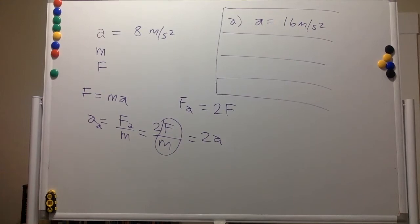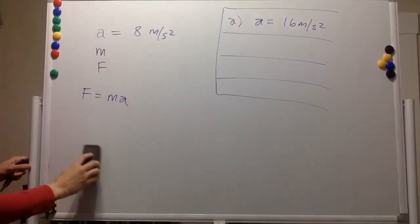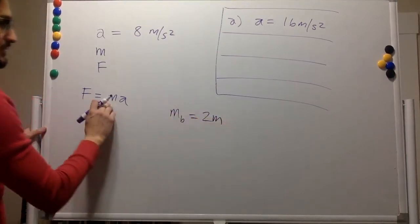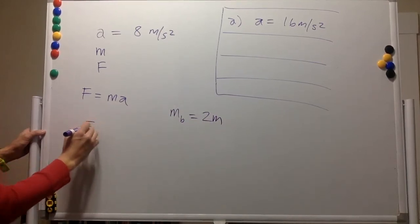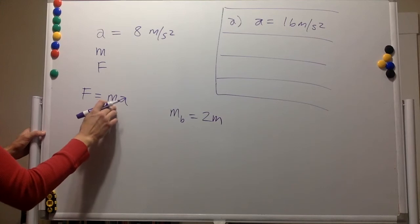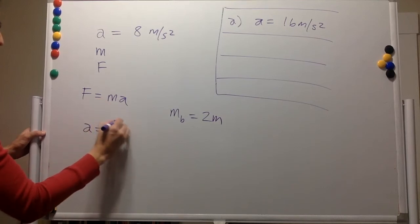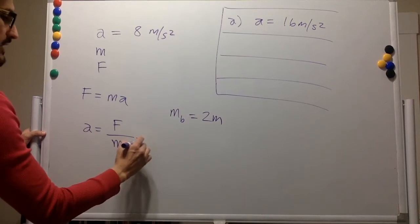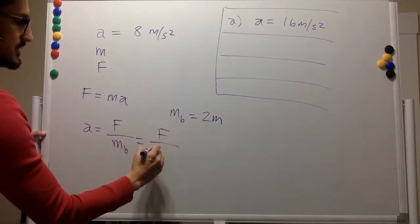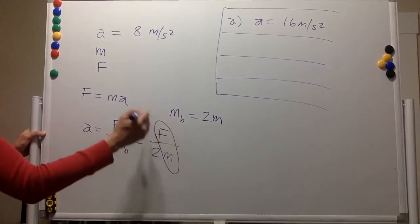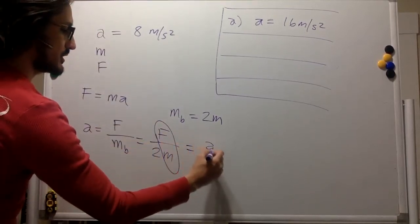Now for part B, the object's mass is doubled. Let's call mass B twice the original mass. We want to find the acceleration, which is going to be the original force divided by mass B. Mass B is twice the original mass, so force divided by mass gives us the original acceleration divided by 2.